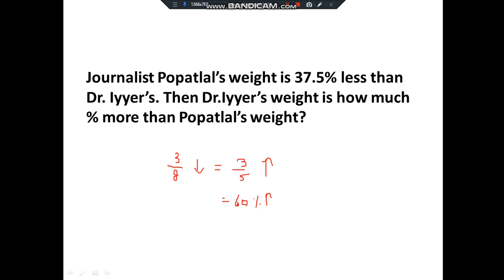Next question: journalist Popat Lal's weight is 37.5% less than Dr. Iyer's. Then Dr. Iyer's weight is how much percentage more than Popat Lal's? 37.5% in fraction is 3/8 (from the table where denominator is 8). It is decreased, so down arrow. Keep numerator same: 3. Since decreased, subtract: 8−3=5. So 3/5 = 60% increase.